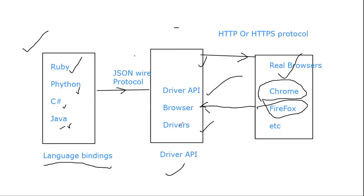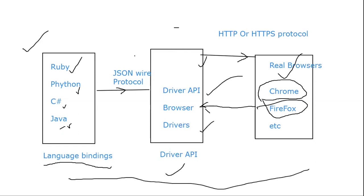This is all about the basic architecture of the WebDriver. Keep in mind these four basic blocks: Selenium language bindings, JSON-Wire protocol, browser drivers, and real browsers. These are the four basic blocks to remember.